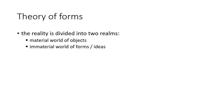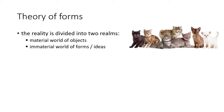According to this so-called theory of forms — or theory of ideas — reality is divided into two large and independent realms. The first one is the material world of objects, and the second is the immaterial world of forms or ideas. I can illustrate it with this picture: there are a lot of cats in the material world of objects, but there is just one form of cat, or catness — just one idea of cat in the immaterial world of forms Plato invented and described.